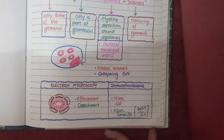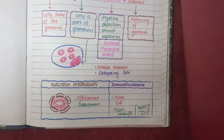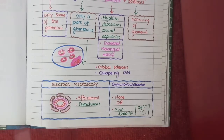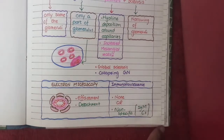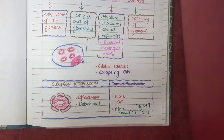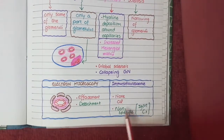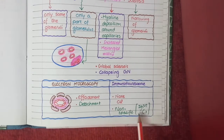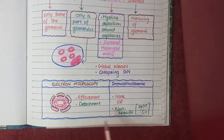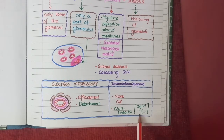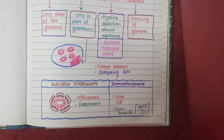On electron microscopy, the changes are similar to minimal change disease: effacement or flattening of foot processes of podocytes, and detachment of some podocytes from their location. As for immunofluorescence, since the disease is not mediated by antigen-antibody complexes or complement proteins, staining is usually negative. However, in some cases there may be non-specific trapping of IgM antibody and C3 complement proteins, so immunofluorescence can be positive for these in a few cases. This concludes our discussion on minimal change disease and focal segmental glomerulosclerosis.